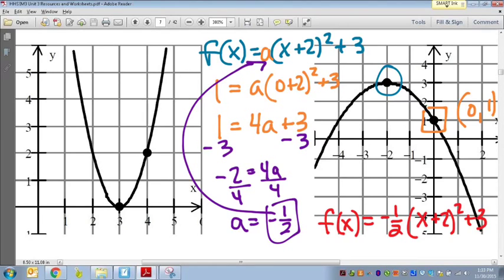Which makes sense, right, because if it's negative 1 half, that means it should be wider than usual, and then the negative would imply that it's facing downwards, which this equation is. So that is how you find the multiplier. You use the second secondary point, plug it in to find a or whatever the multiplier is in front, and that's how you do it for a parabola.